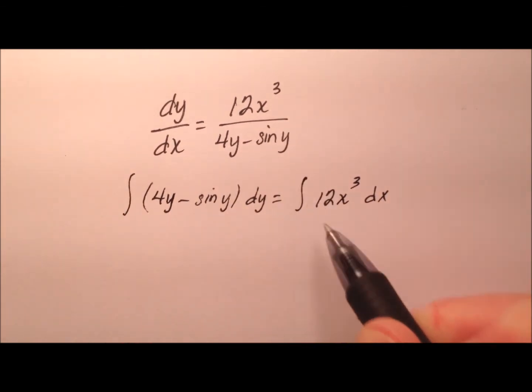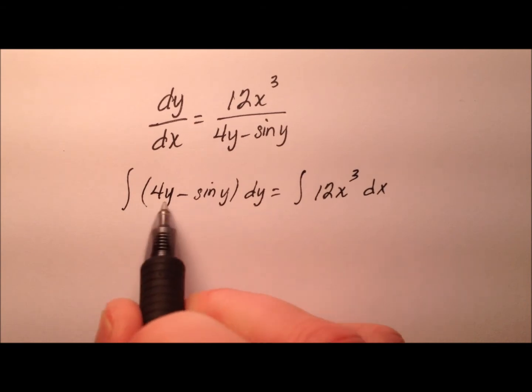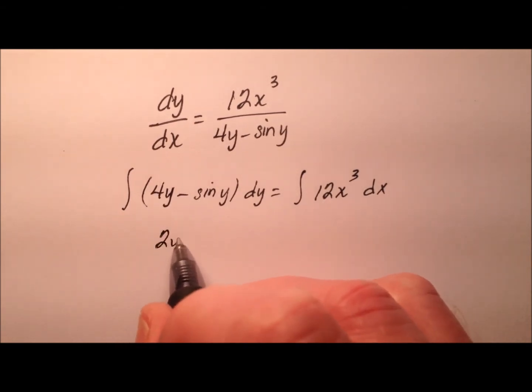So I can go ahead and integrate both sides of my equation. So the integral of 4y will be 2y squared.